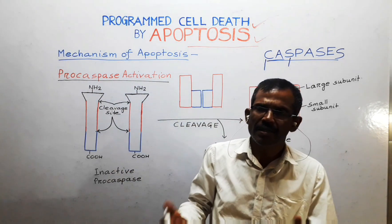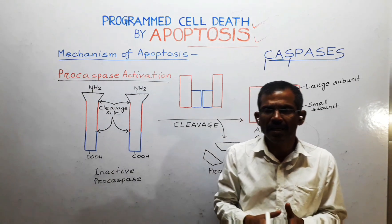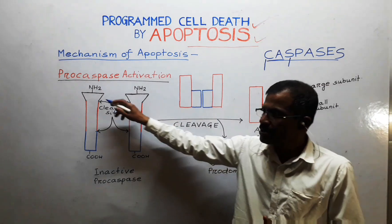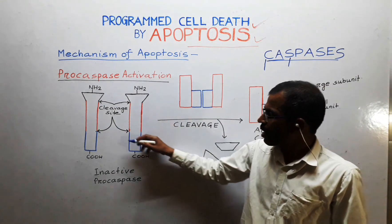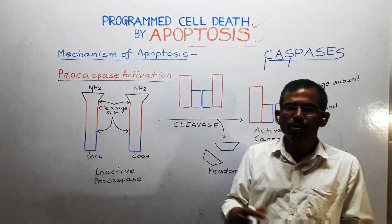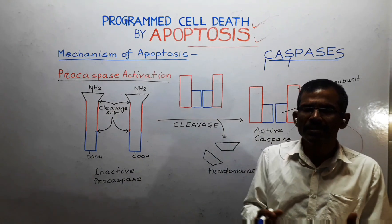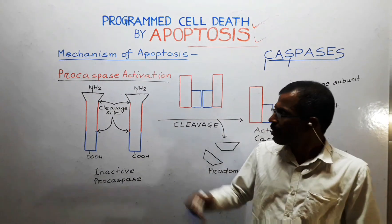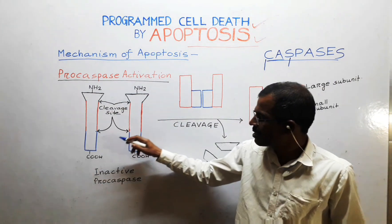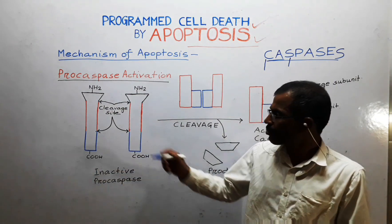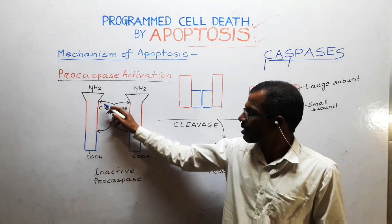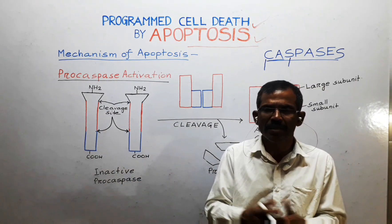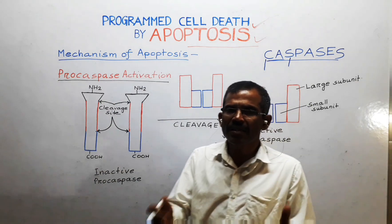Caspases are synthesized in the cell as an inactive precursor known as Procaspase. These Procaspase molecules are proenzymes which are activated by proteolytic cleavage. Procaspase cleavage occurs at one or two specific aspartic acid residues, mediated by caspases which are already active.